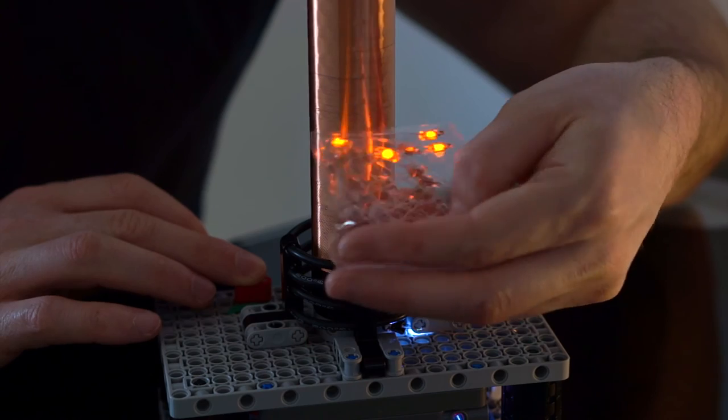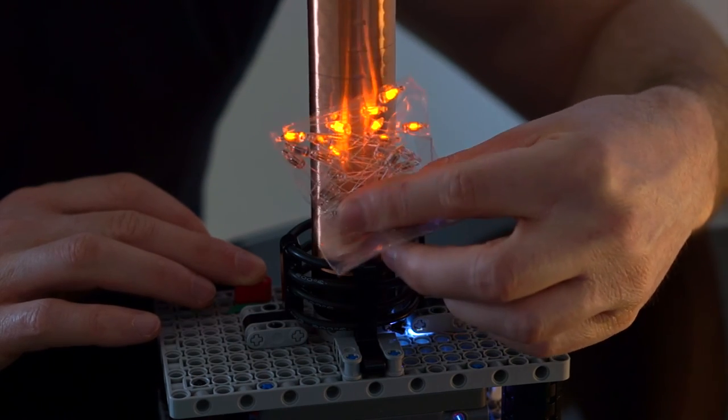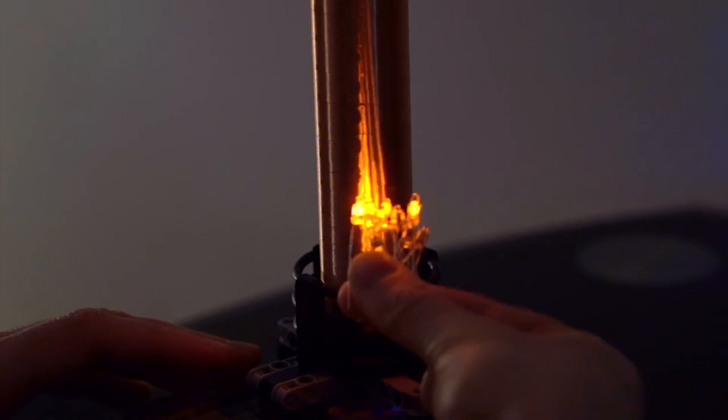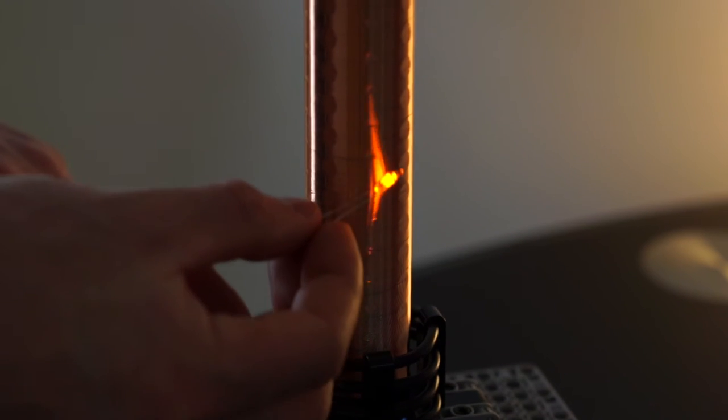And these little guys are also neon filled bulbs. They too glow when brought near the coil. And these little ones were interesting in that they identified a minor issue with my coil.